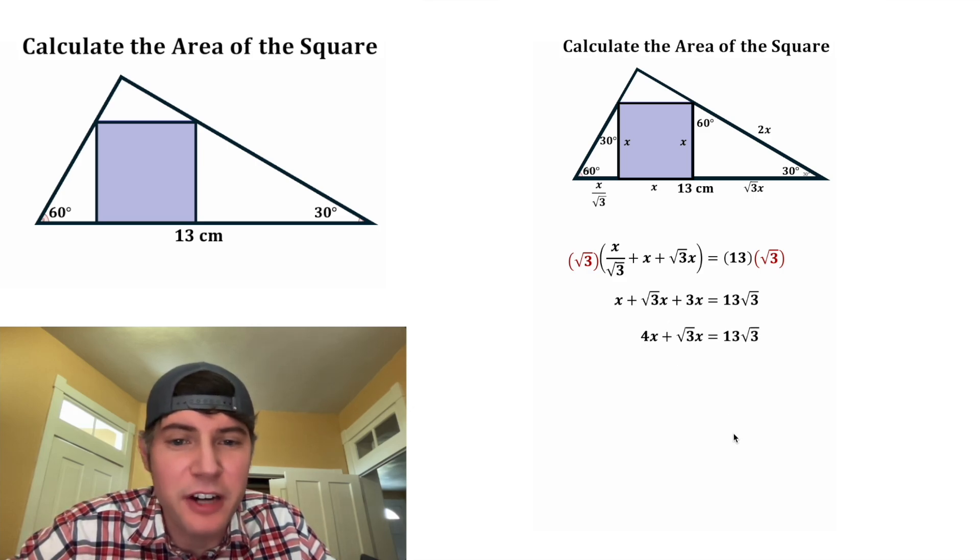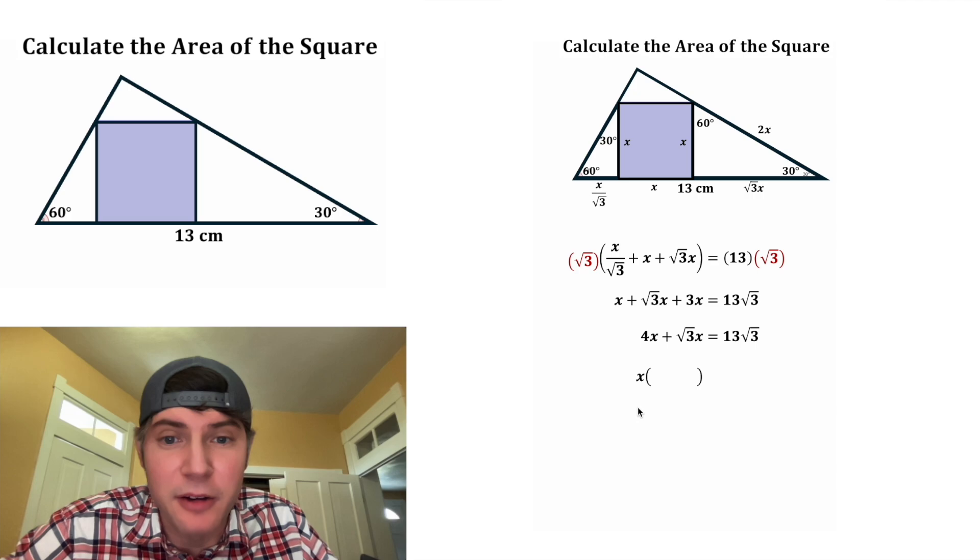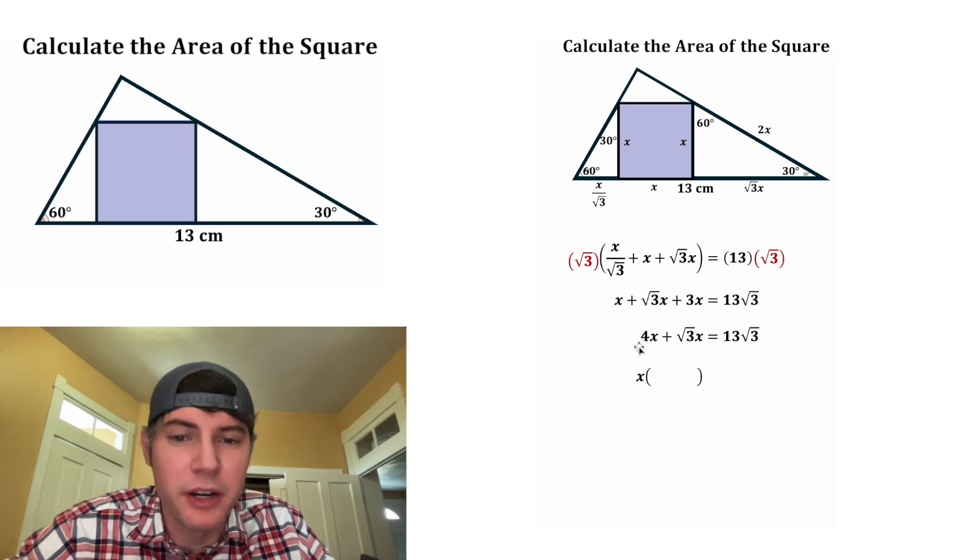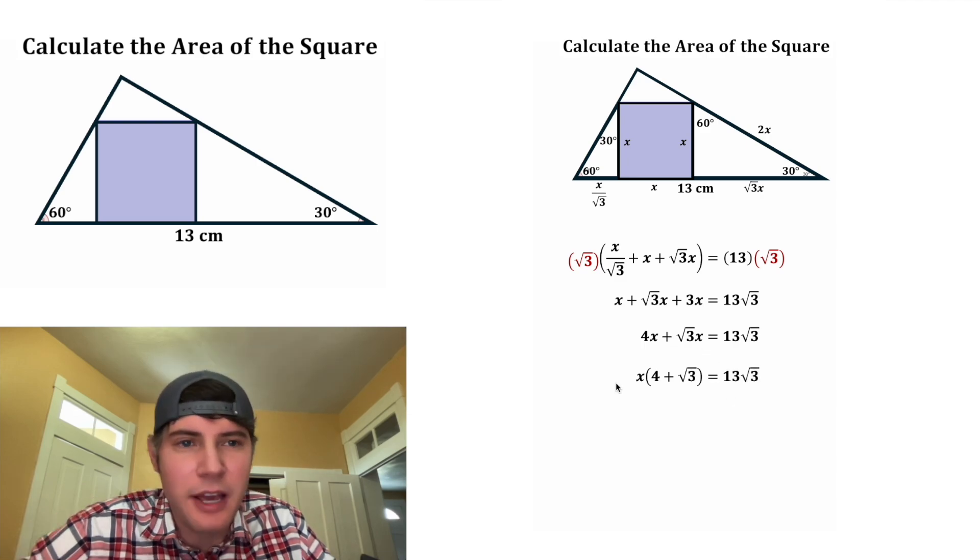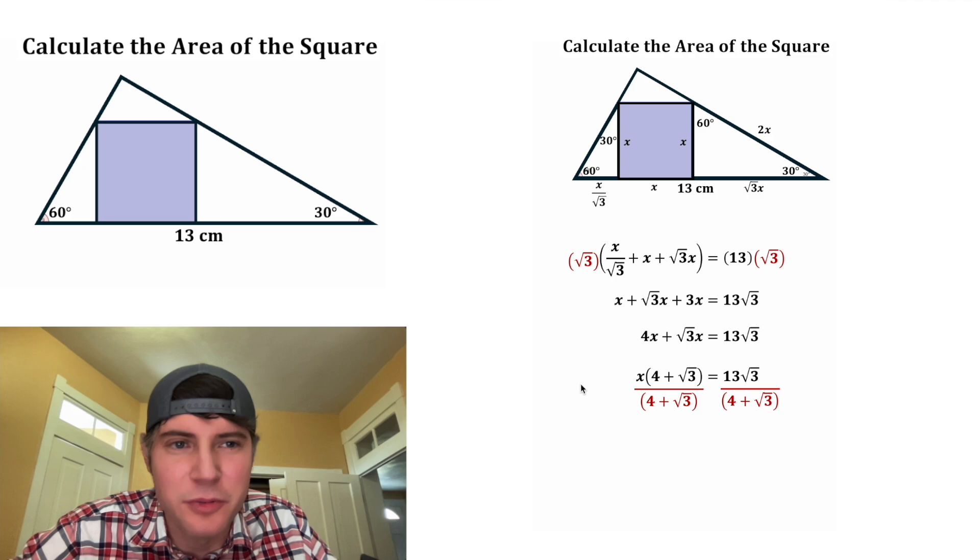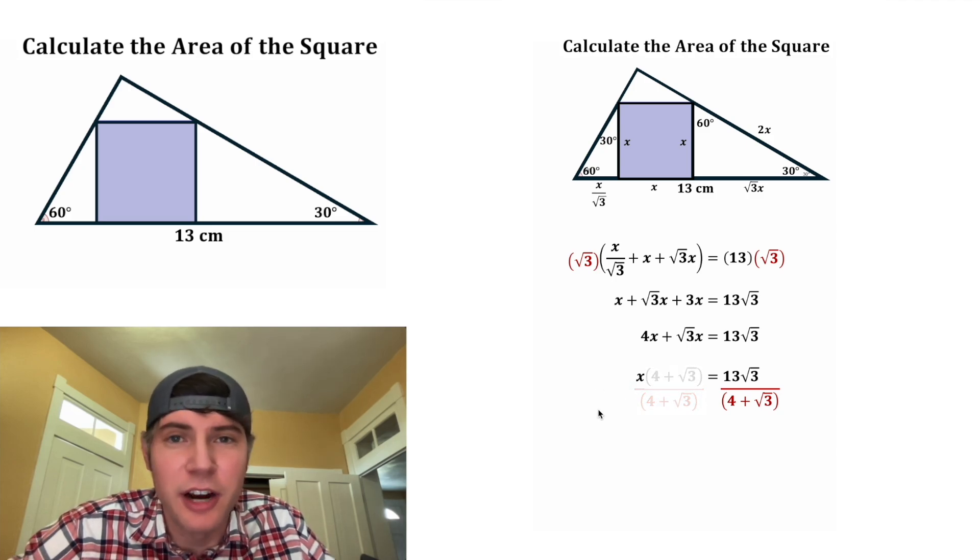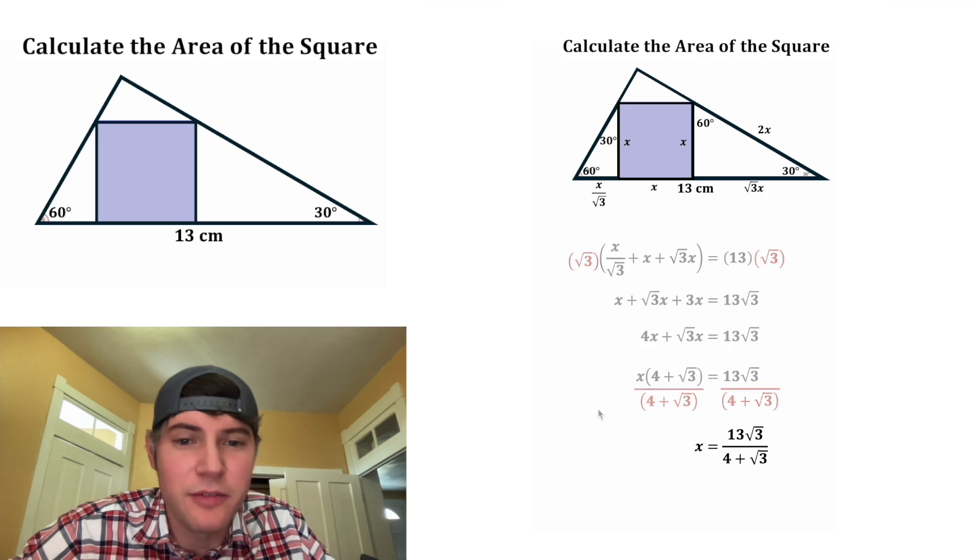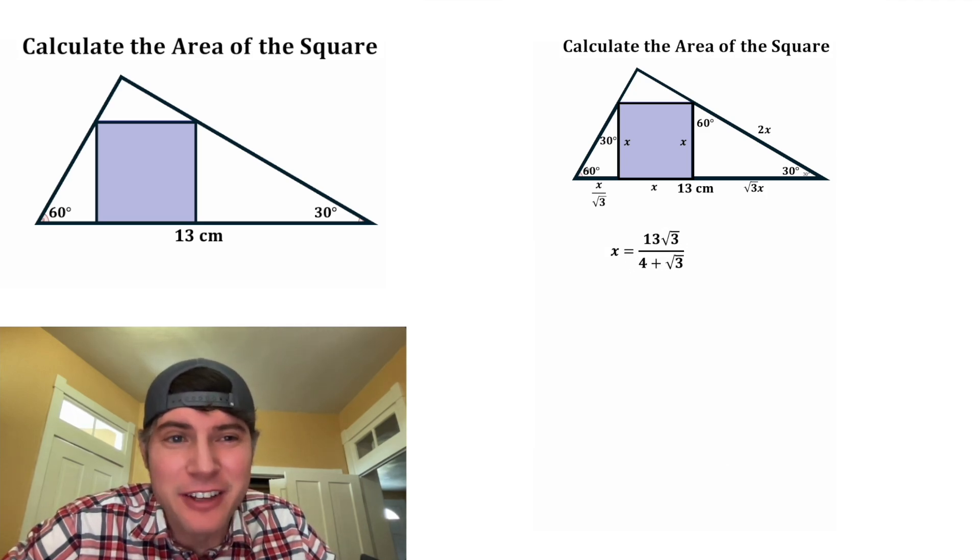X plus three X is four X, and we can bring down the root three X. Both these terms have a common factor of X, so let's factor it out. X times what gives us four X? Well, that's four. And then we're going to add to that X times what gives us root three X? Well, that's root three. And then to get the X by itself, we can divide both sides by four plus rad three. These cancel each other out, so X is all that remains. And on the right-hand side, we have all this stuff. And now we've solved for the exact value of X.